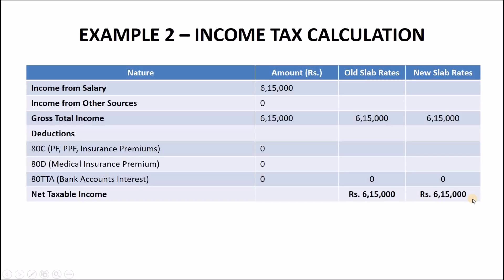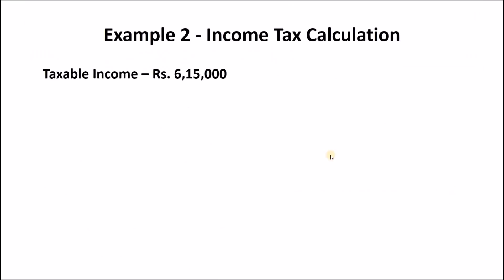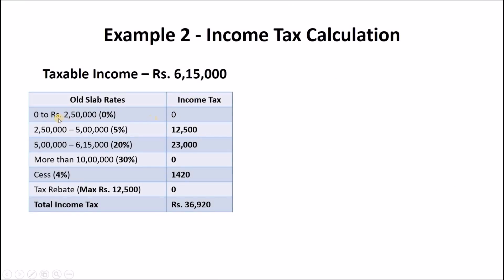Calculating income tax based on old tax slab rates: no tax on income between Rs 0 to Rs 2.5 lakhs; 5% tax on income between Rs 2.5 lakhs to Rs 5 lakhs which equals Rs 12,500; 20% tax on income between Rs 5 lakhs to Rs 6,15,000 which equals Rs 23,000. A 4% cess on total income tax equals Rs 1,420, making your total income tax Rs 36,920.